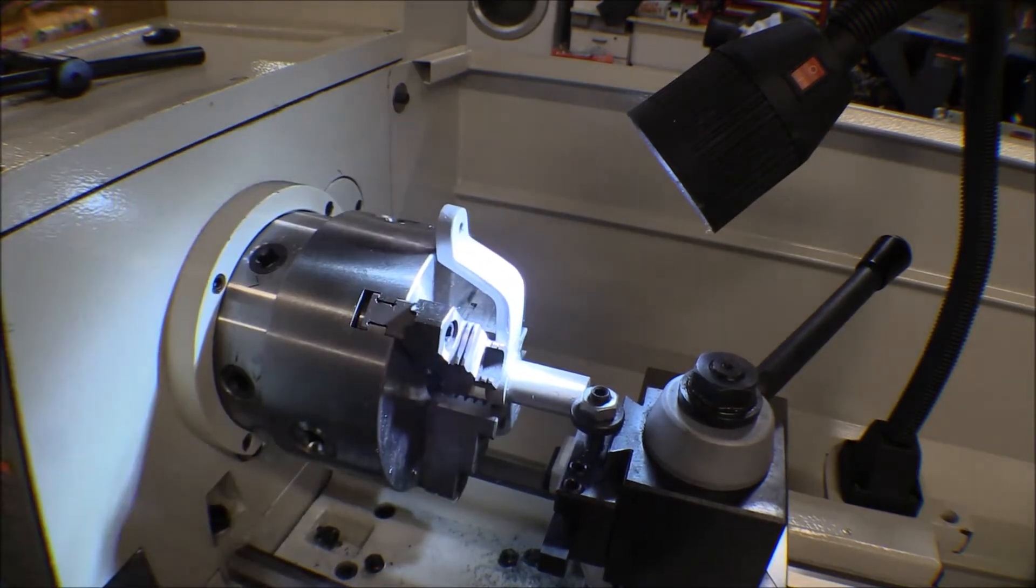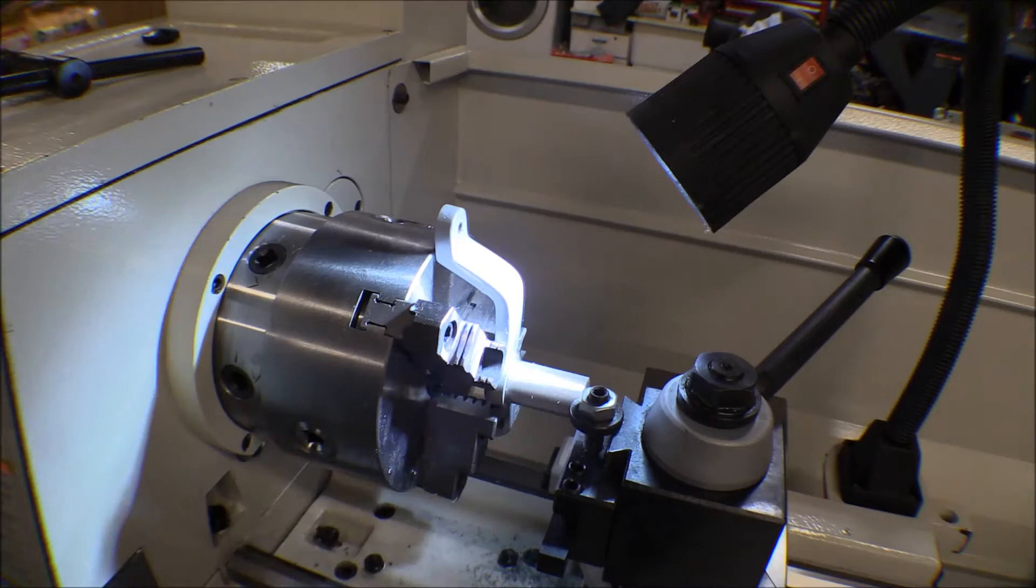Now I have to get the rudder down and take a measurement of the ID of that tube, and then we'll take this down to that dimension. It just doesn't have to be too precise, it's just a sliding fit up in there.